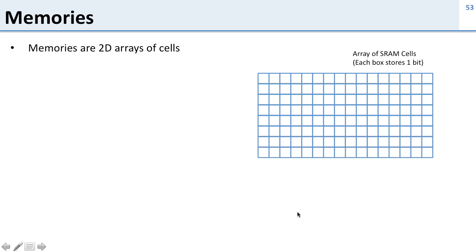So let's start out with what a memory is. A memory is a 2D array of cells. Here's our two-dimensional array and it has all these cells which are these squares here. Each of these cells is going to store one bit either a one or zero.